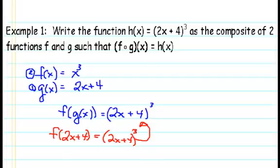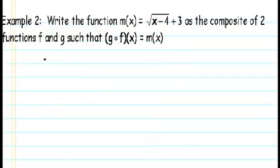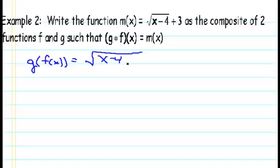Let's try this again with another example. In our second example, example 2, we're asked to write the function m of x equals the square root of x minus 4 plus 3 as a composite of two functions f and g, such that g circle f of x equals m of x. So let's begin in the same way that we did our first example. Let's rewrite the left hand side using our function notation. So g circle f of x is g of f of x. And the right hand side, let's replace with what we're trying to get, which is the square root of x minus 4 plus 3.